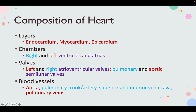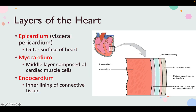The layers of the heart: the epicardium is the visceral pericardium and is the actual outer layer of the heart; the surrounding structures like the pericardial cavity and parietal and fibrous pericardium don't need to be memorized right now. The myocardium is the incredibly thick middle layer composed of the heart's muscle cells. The endocardium is the inner lining of connective tissue — essentially an endothelial layer that is continuous with blood vessels.